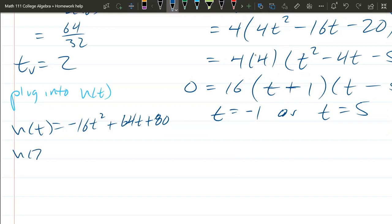We have negative 16t squared plus 64t plus 80. And h(2). You just plug in 2 everywhere. 2 squared is 4 times 16 is a lot. It's negative 64. Plus 64 times 2 plus 80.